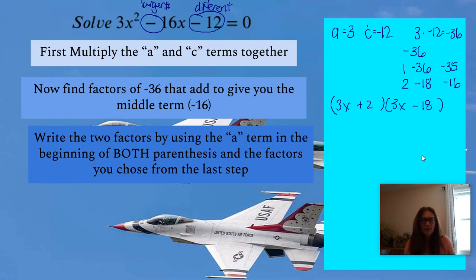My 3x is appearing in both of them. And then my positive 2 and my negative 18 are going to go as those last terms. The order doesn't matter there.